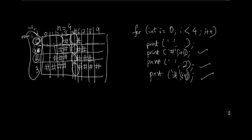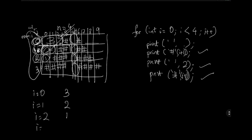But we now need to figure out how many spaces we need over here. If you look at how many spaces there are: in the first row we have 3 spaces, in the second row we have 2 spaces, in the third row we have 1 space, and then we have 0 spaces. So let's relate this with i. When i is 0, we need 3 spaces; when i is 1, we need 2 spaces; when i is 2, we need 1 space; and when i is 3, we're printing 0 spaces.